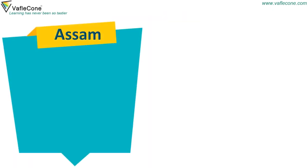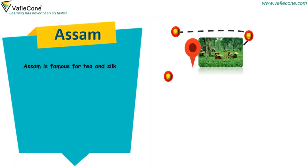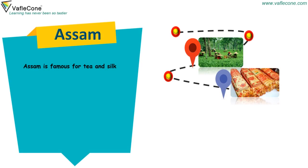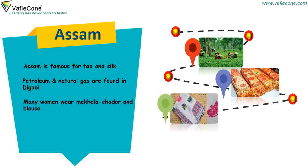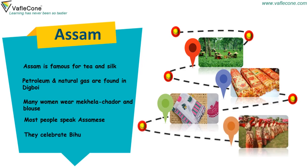Assam: Assam is famous for tea and silk. Petroleum and natural gas are found in Digboi. Many women wear meekla chador and blouse. Most people speak Assamese. They celebrate Bihu.